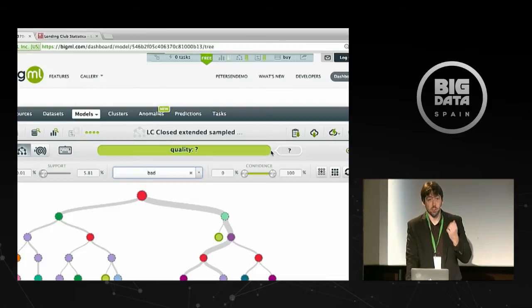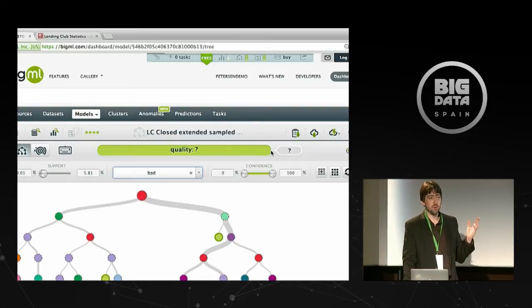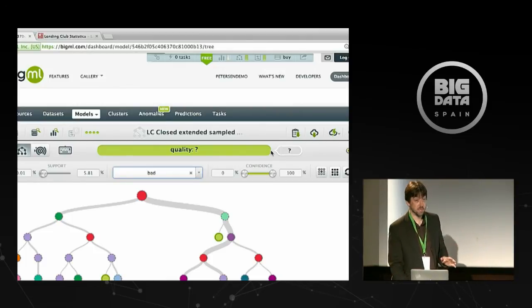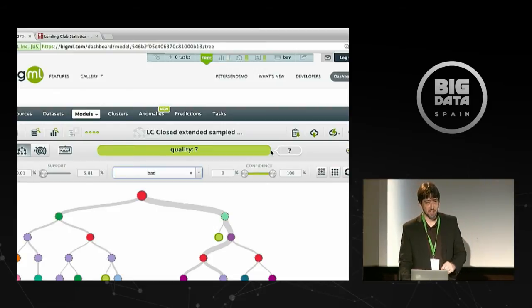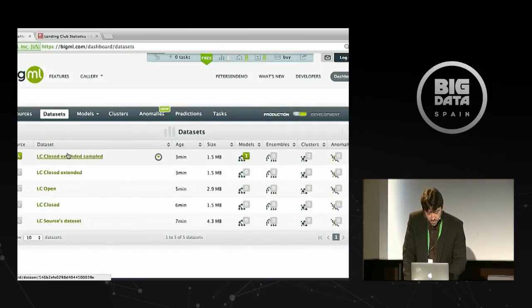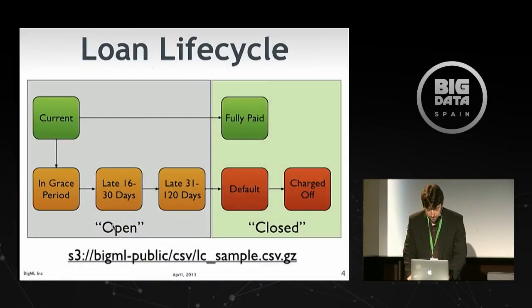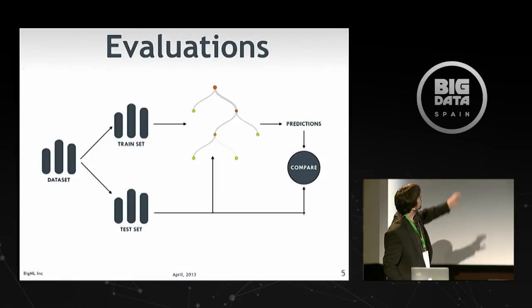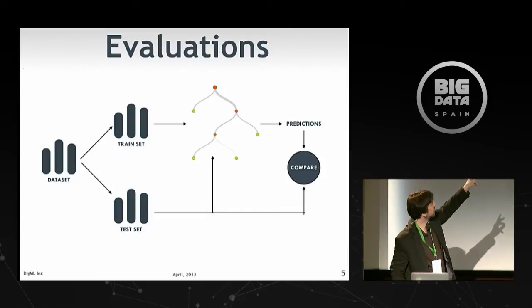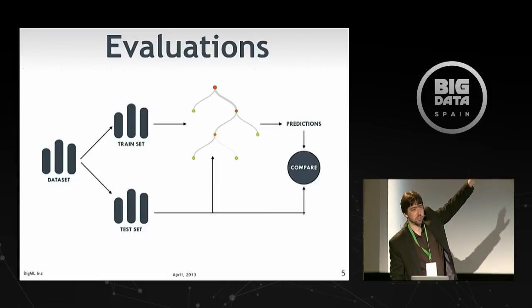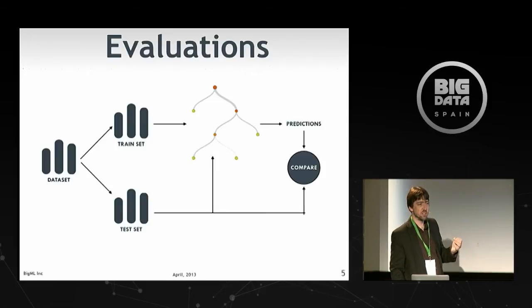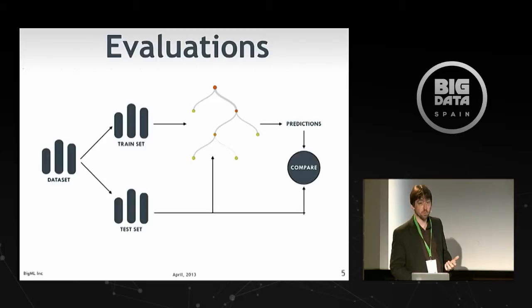We could score the open loans now, but we have no idea if this model is doing anything useful — it's not statistically convincing yet. So instead, let's go back to our dataset and do a training and test split. By default we do an 80/20 split. The idea is you build your model on the training set, hold out the test set, make predictions against it — the model never saw those instances — and compare known outcomes to predicted values. This gives you a sense of how well your model performs on data it's never seen before.